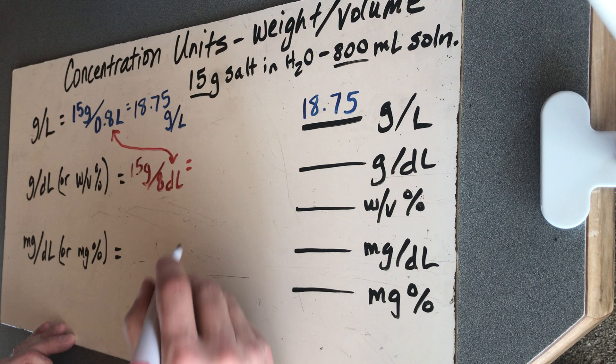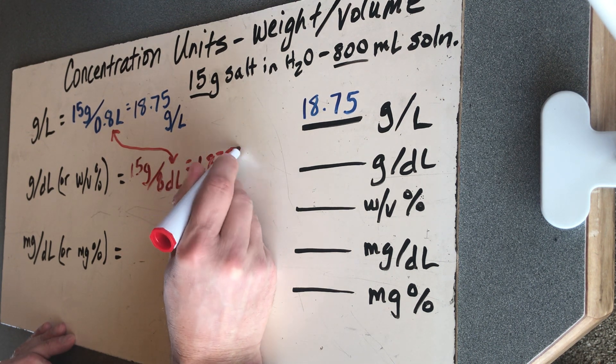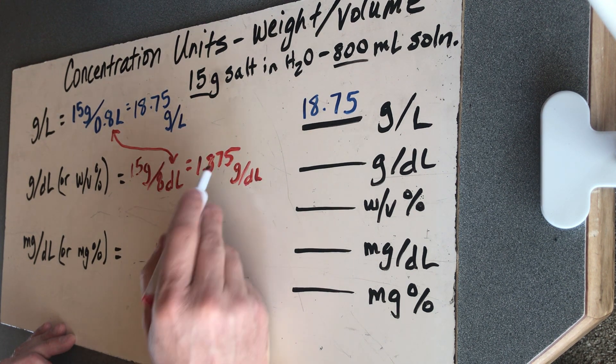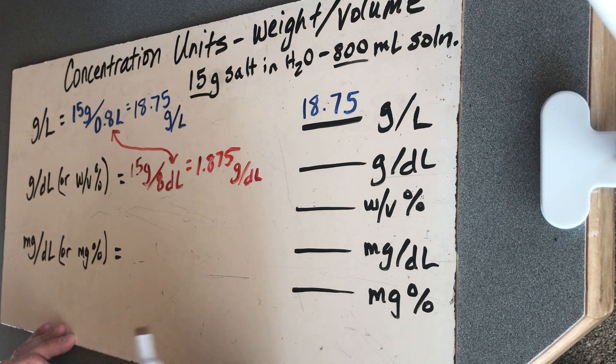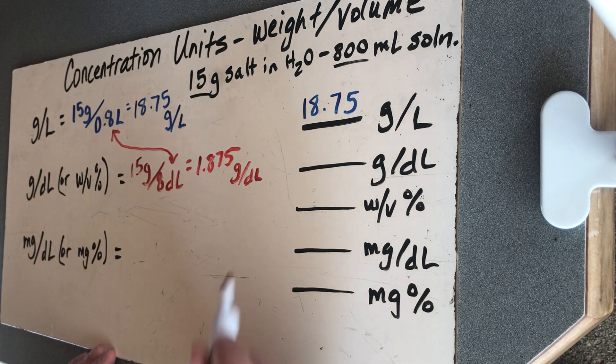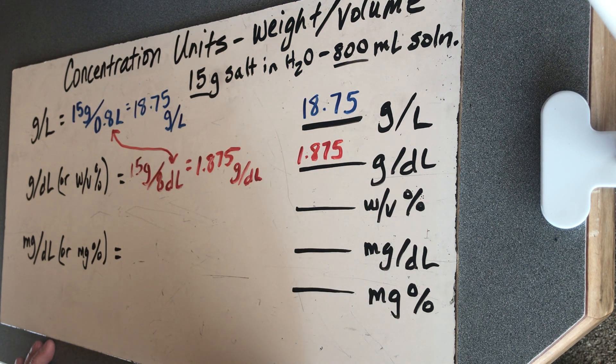Now, when I plug that in a calculator, I'm going to see something that looks familiar. This is 1.875 grams per deciliter. Look, it's about the same as this number here, just the decimals one spot over. So yes, there are some shortcuts to maneuvering this around. So I'm going to put 1.875 grams per deciliter.